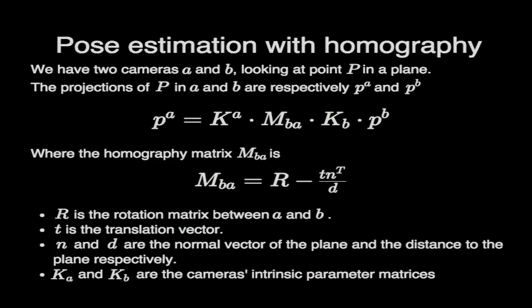We have two cameras A and B looking at the same point P in a plane. The projection of P in A and B are respectively PA and PB, and we can express PA as a function of PB. The matrix M is the homography and can be expressed through R, which is a rotation matrix, and T, which is a translation. The K matrices are the camera intrinsic parameters, so we can compute them.